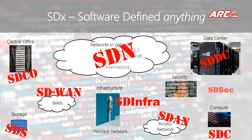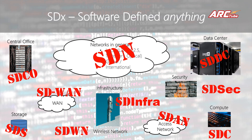For security it becomes software defined security, and for the wireless network it is software defined wireless network. Make sure you do not confuse these different terms: SD-WAN refers to software defined WAN, whereas the software defined wireless network refers to the wireless variant. Even though this is not the complete list, these are the mainly used ones when it comes to SDX, and out of these, SDN plays a major role.